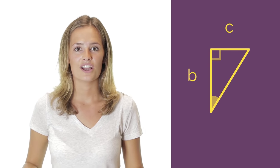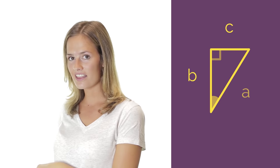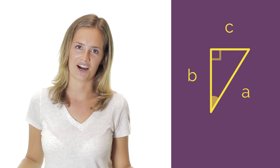But why is it useful? If you know the lengths of two sides of a right-angled triangle, you can really easily find the length of the other side. So let's have a look at an example.